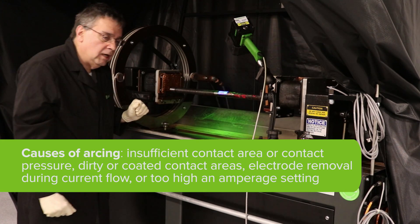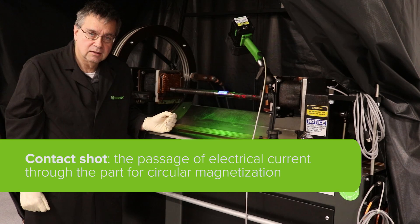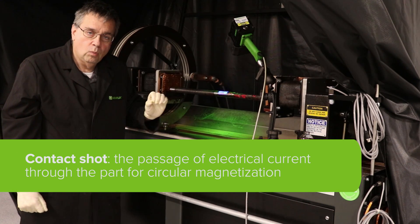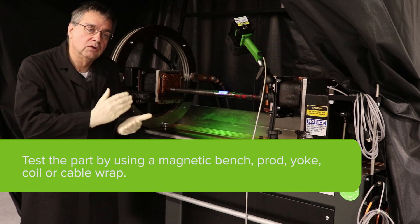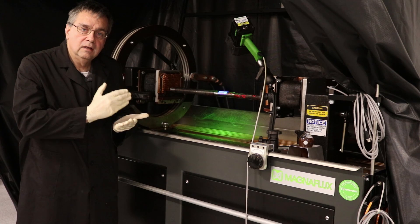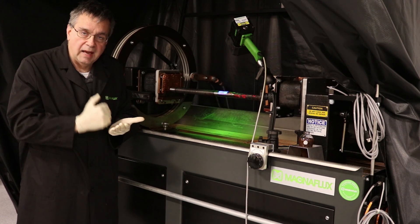The next step is set the machine up for a contact shot. We're going to be doing a standard wet horizontal inspection process, which means we'll do the contact shot, inspect the part, coil shot, inspect the part, and then we'll demagnetize the part.